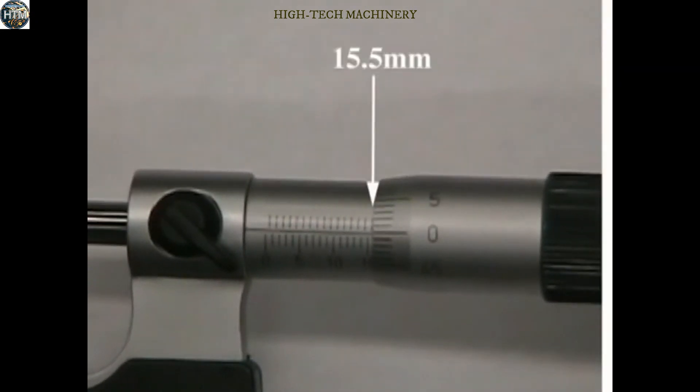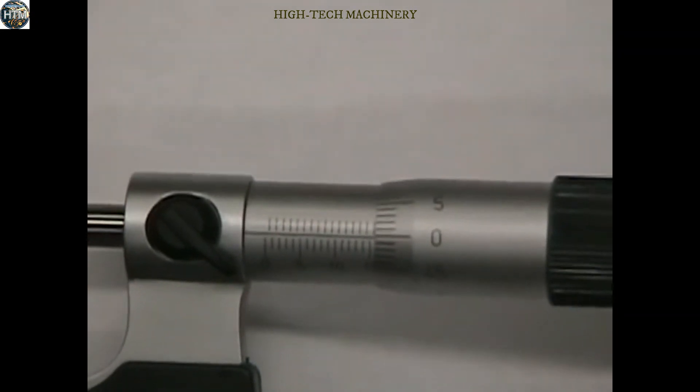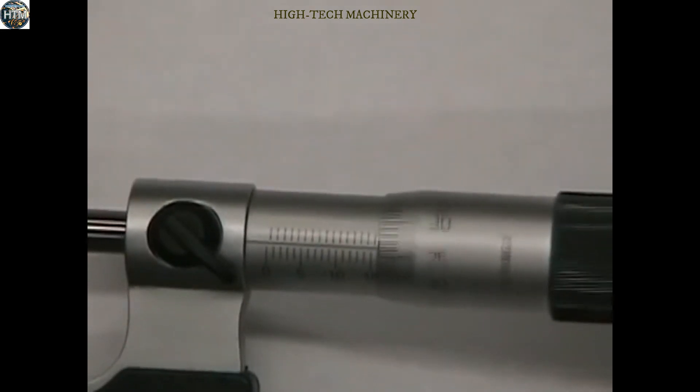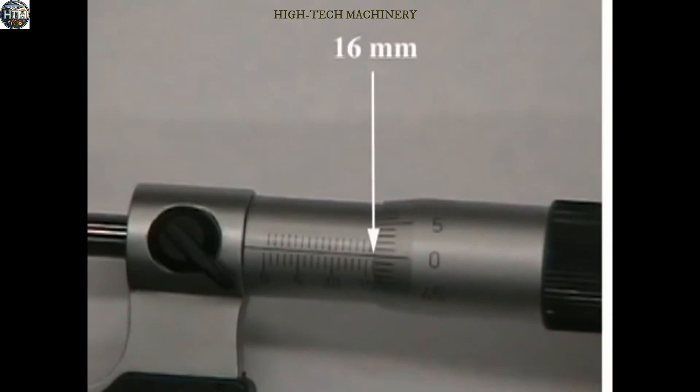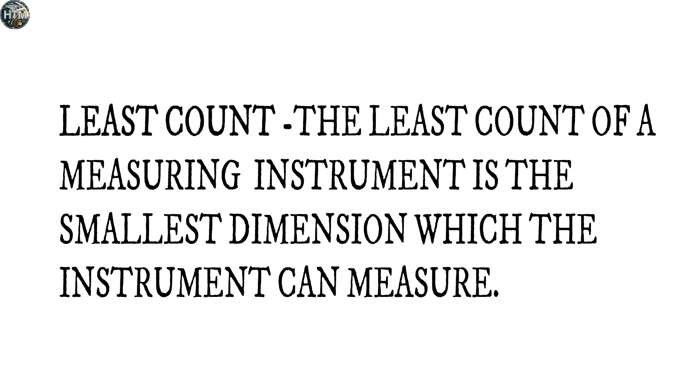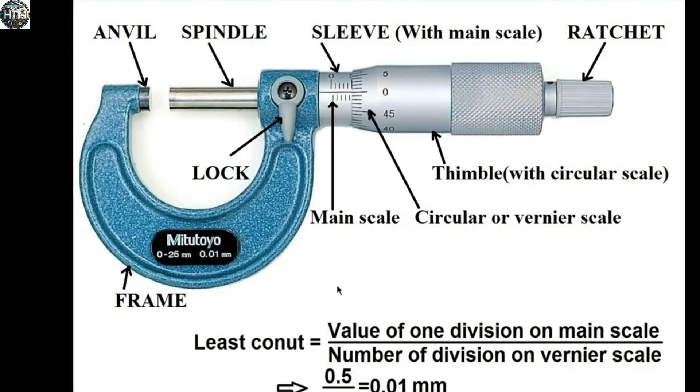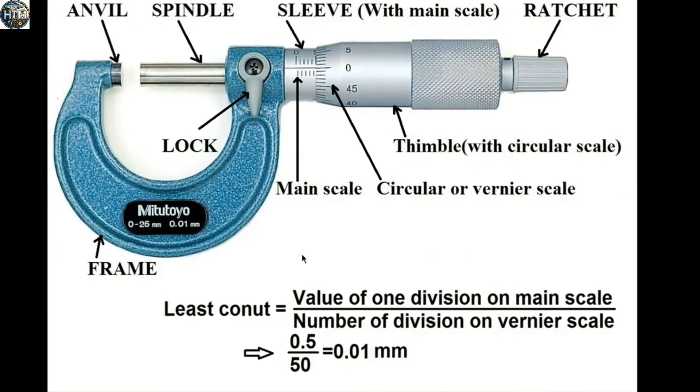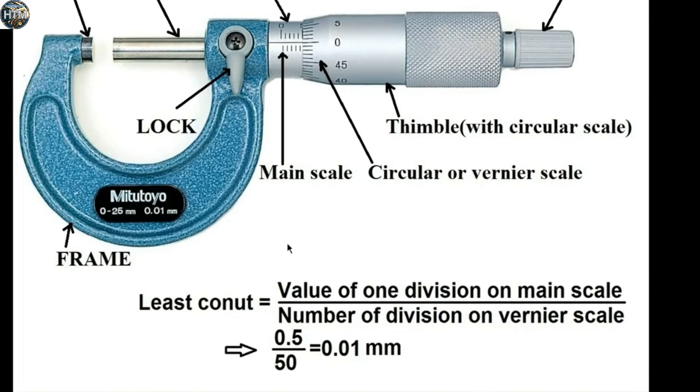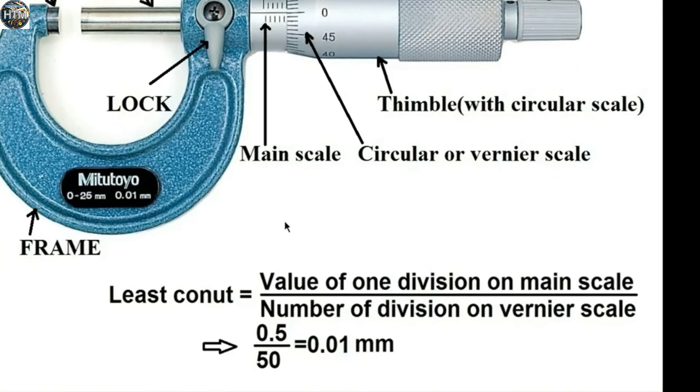To learn micrometer reading, first we need to understand the least count. The least count of a measuring instrument is the smallest dimension which the instrument can measure. Least count of a micrometer equals the value of one division on the main scale divided by the number of divisions on the vernier scale.